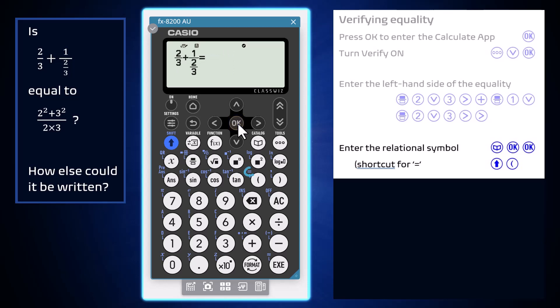As equals is the most common of these symbols, it can be entered without the catalog by pressing shift and the left bracket key.